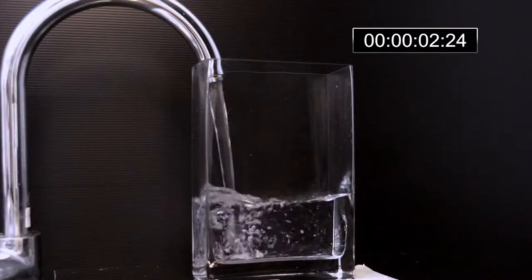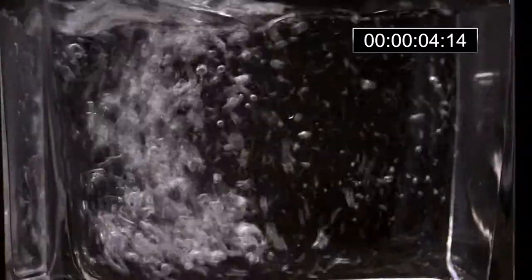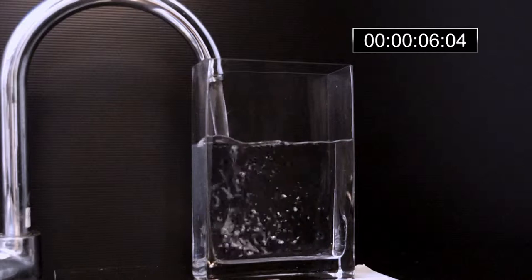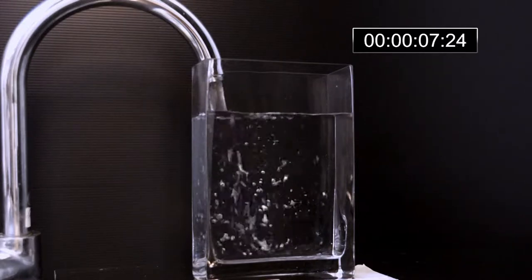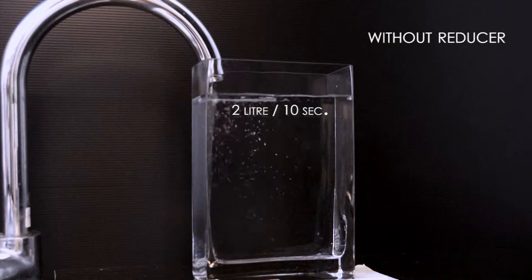What you see here is a demonstration of a sink faucet with no water flow control device. Depending on the water pressure, you can end up with a water flow of 10 liters per minute or more.